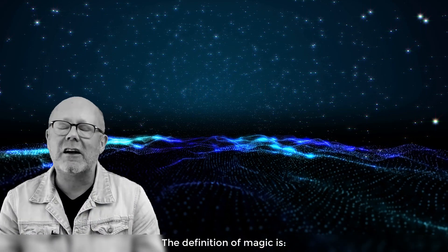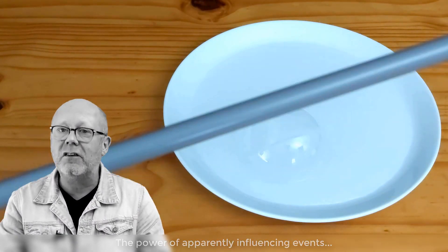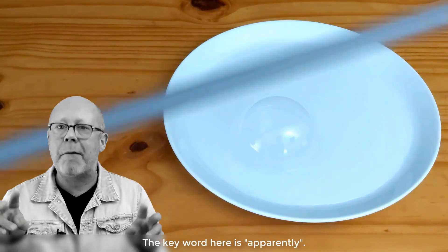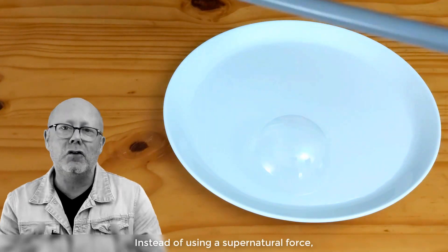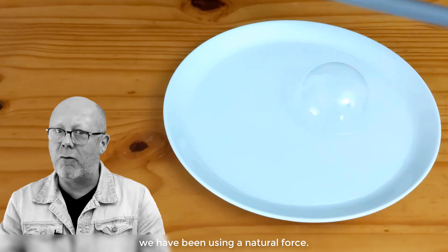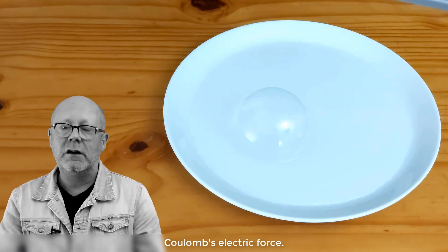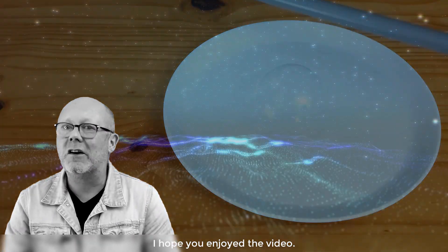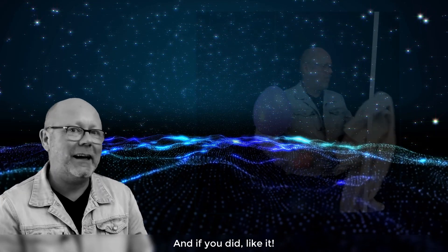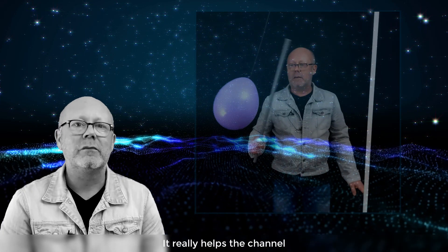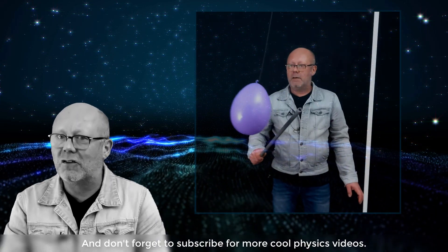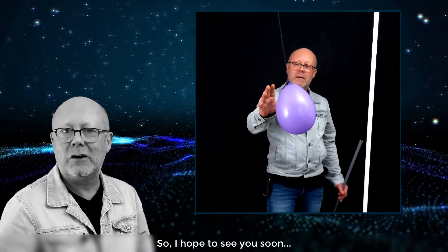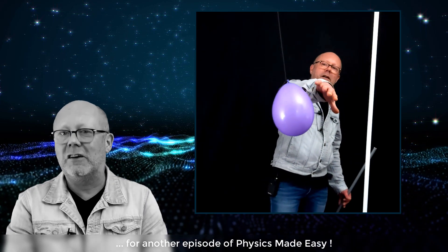The definition of magic is the power of apparently influencing events by using mysterious or supernatural forces. The key word here is apparently. Instead of using a supernatural force, we have been using a natural force, Coulomb's electric force. So in the end, we can say that physics is magic. That's it for today. I hope you enjoyed the video, and if you did, like it. It really helps the channel. And don't forget to subscribe for more cool physics videos. In the meantime, I do have to say goodbye. So I hope to see you soon for another episode of Physics Made Easy.